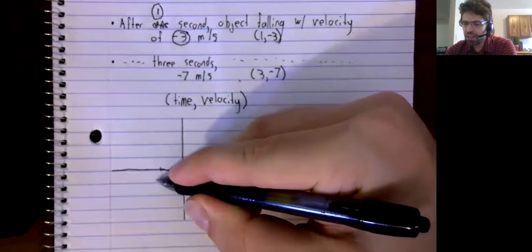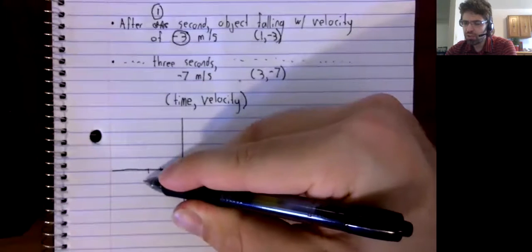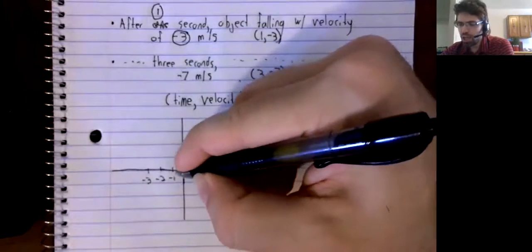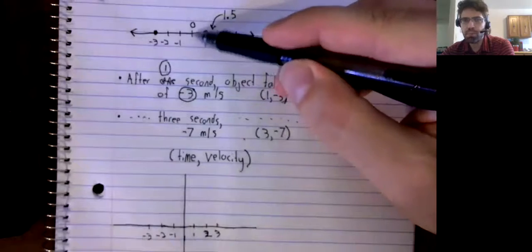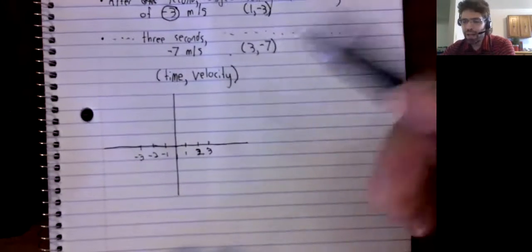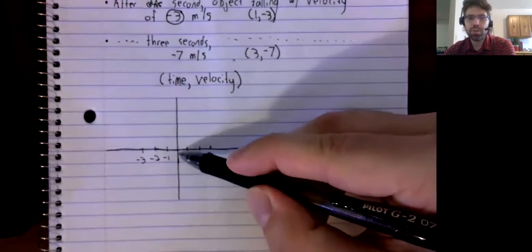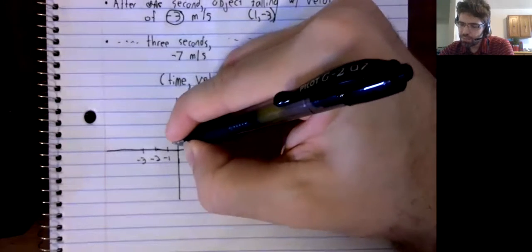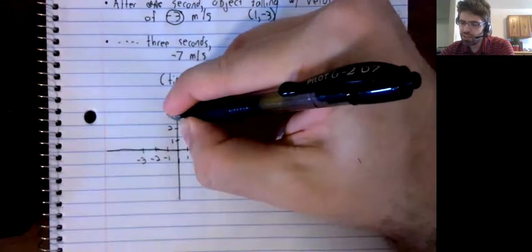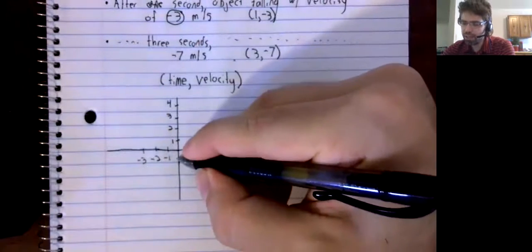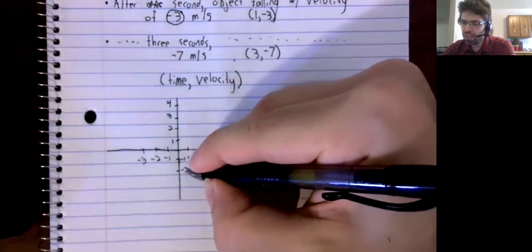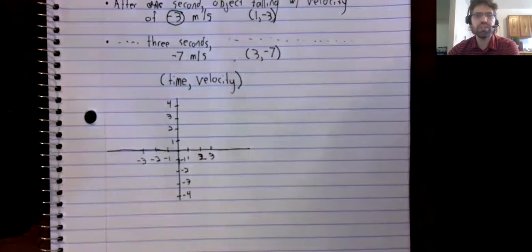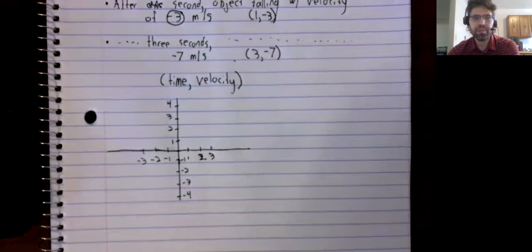He positioned them so that the zeroes intersect each other. Here's the first number line — it's got zero on it. Zero is on any number line. And in particular, zero is here, where these number lines intersect. Likewise, this second number line is situated so that its zero occurs at the point of intersection.